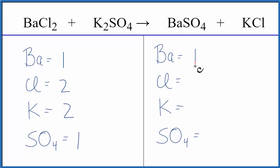On the product side we have one Ba, we have one chlorine, one potassium, and SO4, one sulfate.